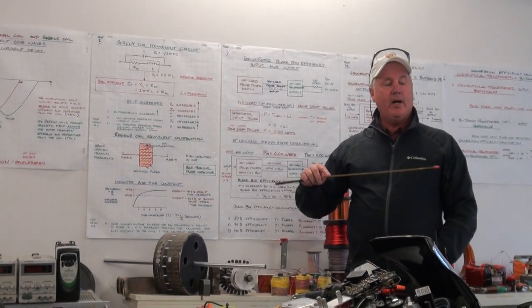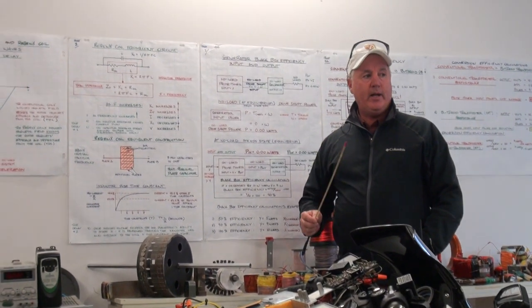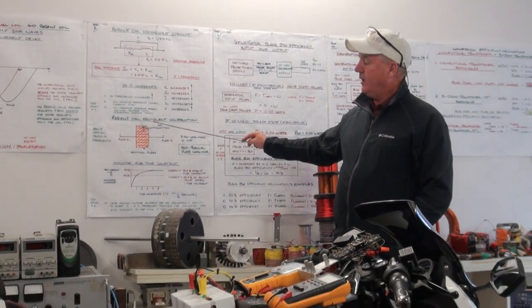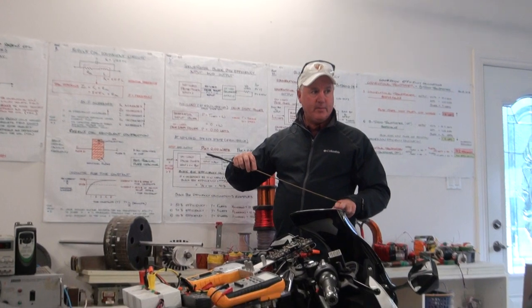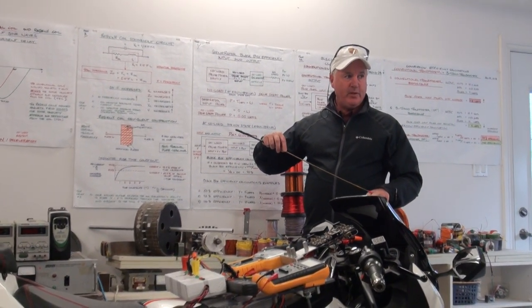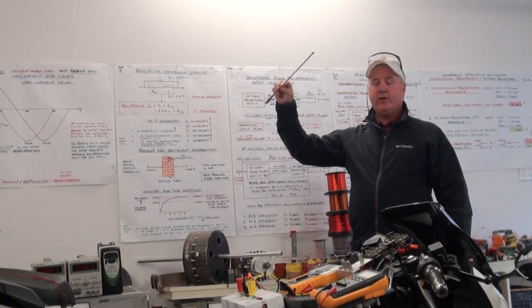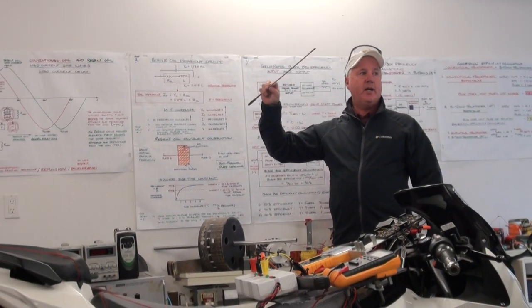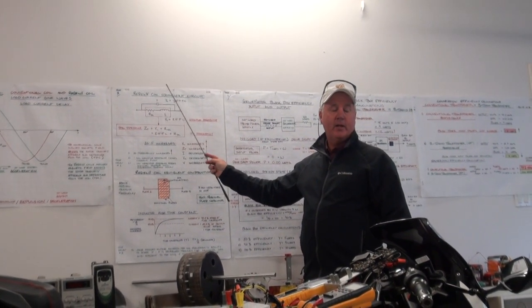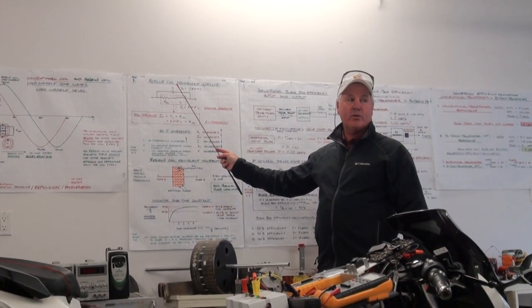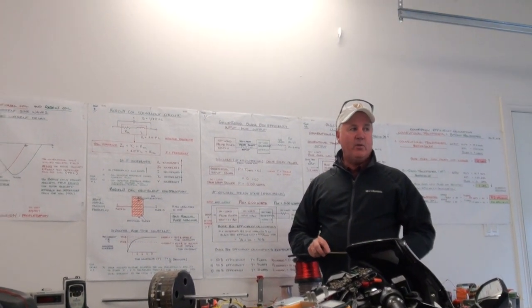The Regen-X coil, when operating above the critical minimum frequency, operates as a multi-parallel plate capacitor. The windings are the plates of the capacitor — if you have two windings side by side, each winding is a plate and the air between them is the dielectric. So the Regen-X coil, when operating above the critical minimum frequency, stores energy as a capacitor in the electrostatic field between the windings.